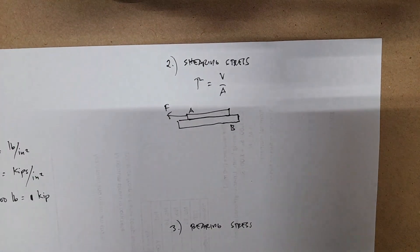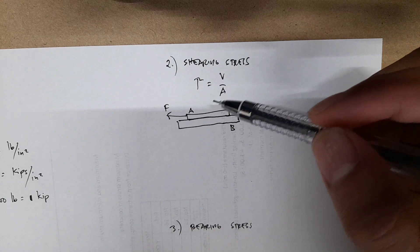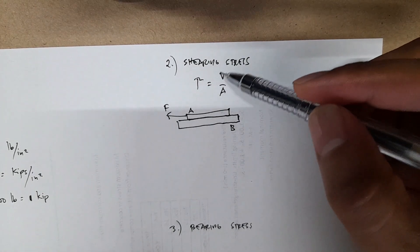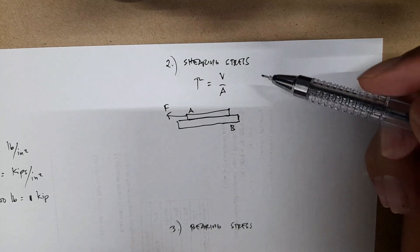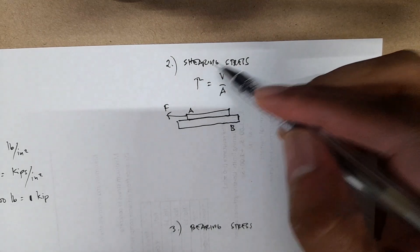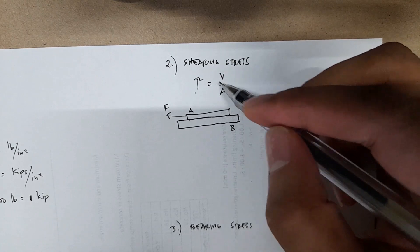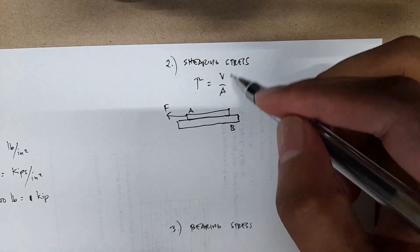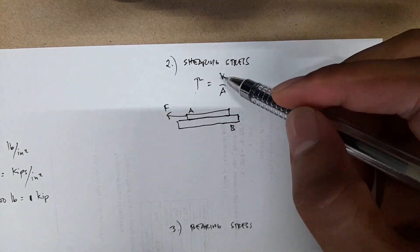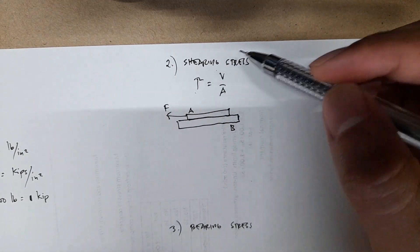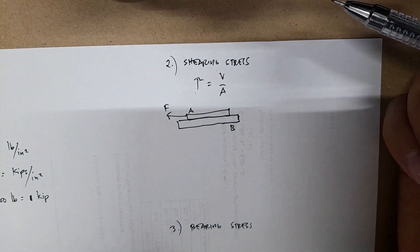The second type is shearing stress. The difference between normal and shearing stress is that in shearing stress, the force V is tangent to your area. Shearing stress is denoted by tau, and the resisting shear force is denoted by V — this is the resultant shear force.